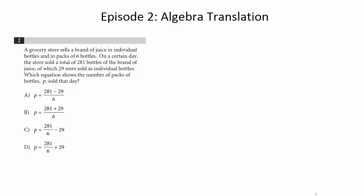A grocery store sells a brand of juice in individual bottles and in packs of six bottles. On a certain day, the store sold a total of 281 bottles of the brand of juice, of which 29 were sold as individual bottles. Which equation shows the number of packs of bottles P sold that day?